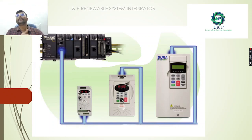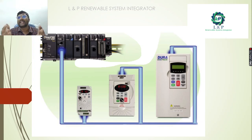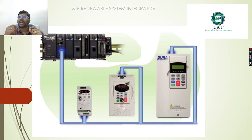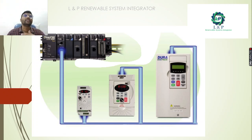As we know, variable frequency drives especially need a separate power supply for their running. Apart from that, it has two features: the controlling feature and the monitoring feature. The monitoring is done through feedback. For controlling and monitoring, we can use either current or voltage. Current can be from 4 to 20 milliamps; voltage can be from 2 to 10 volts. Similarly, for the feedback signal, either as current we can take 4 to 20 milliamps, or sometimes as voltage 0 to 10 volts.